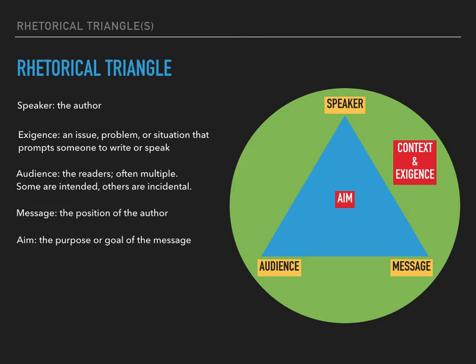The aim is what the author wants to accomplish through their persuasion and message. Sometimes all an author might want is acceptance of the message, but they might also want to inspire an audience to take action, even if they don't tell the audience that, or to change how the audience thinks about the exigence. In other words, the aim is the purpose or goal of the message in the specific space between the speaker, the audience, and the context.